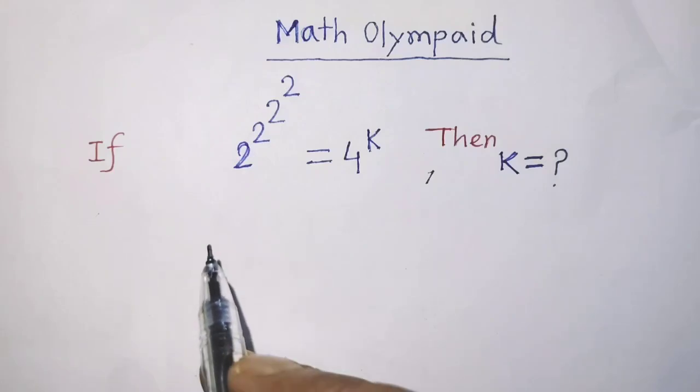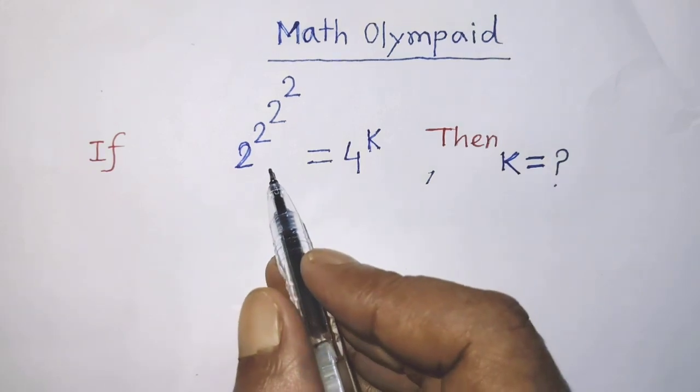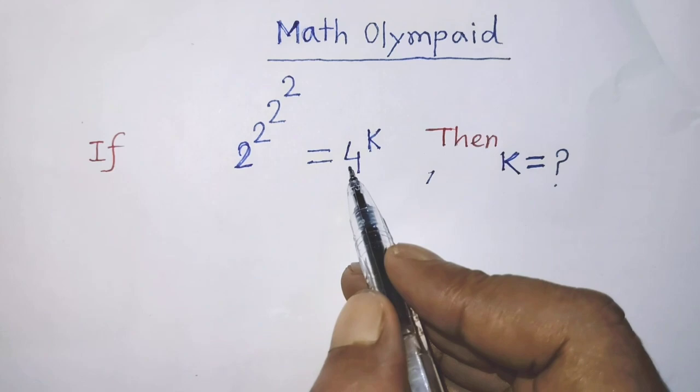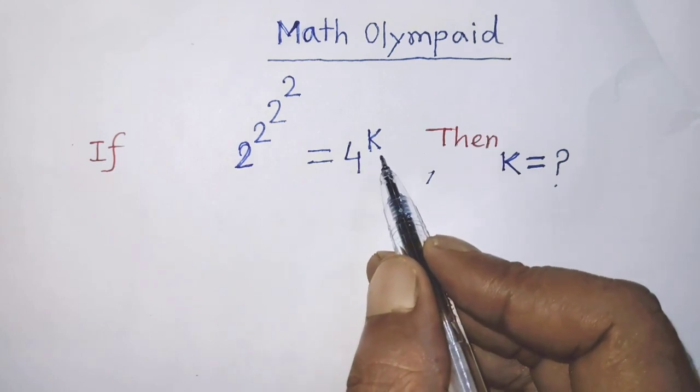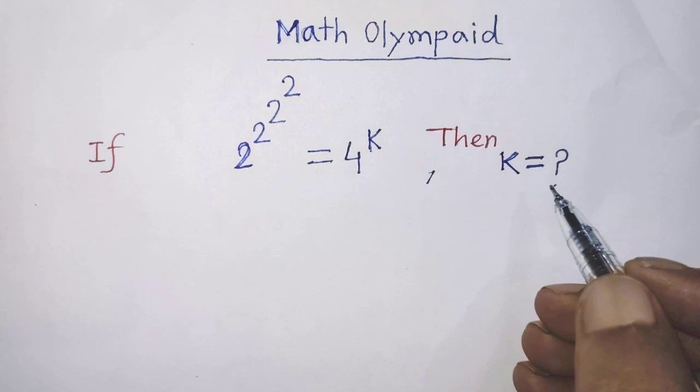Hello guys, you are welcome to solve this math problem which is if 2 power 2 power 2 power 2 is equal to 4 to the power k, then find the value of k.